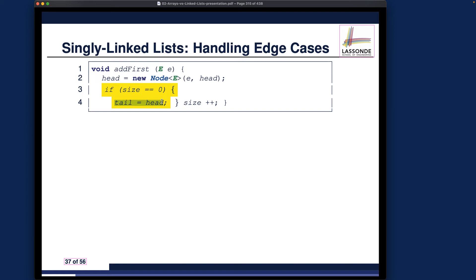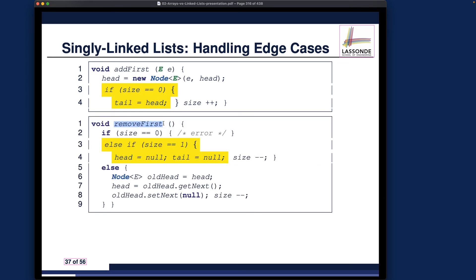The second example is the remove-first method. If the current size of the list is simply just one, meaning that after removing the first node the list will become empty, then both head and tail will be set to null accordingly. Remember we declared two attributes — head and tail — because we want to trade space for time, so that we always have these two attributes available. The catch is whenever you update the state of your singly linked list — inserting, deleting, or any mutation — if the consequence is to change the head or tail, you must update these two attributes accordingly.